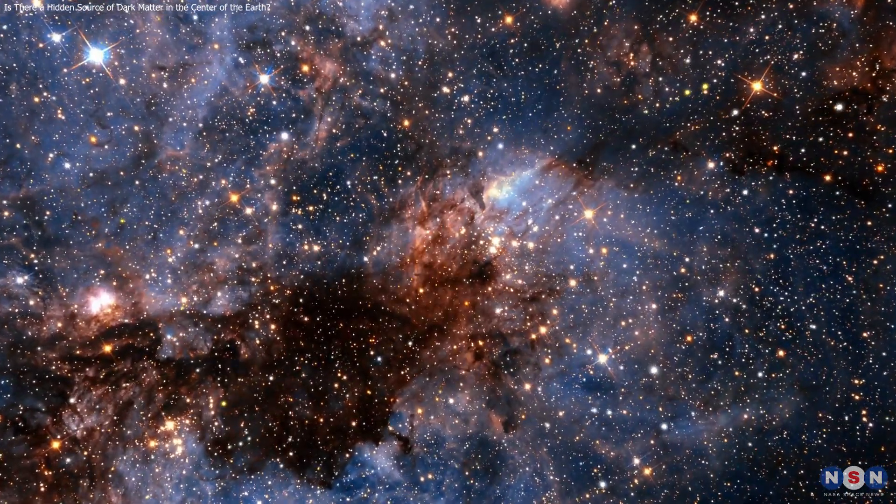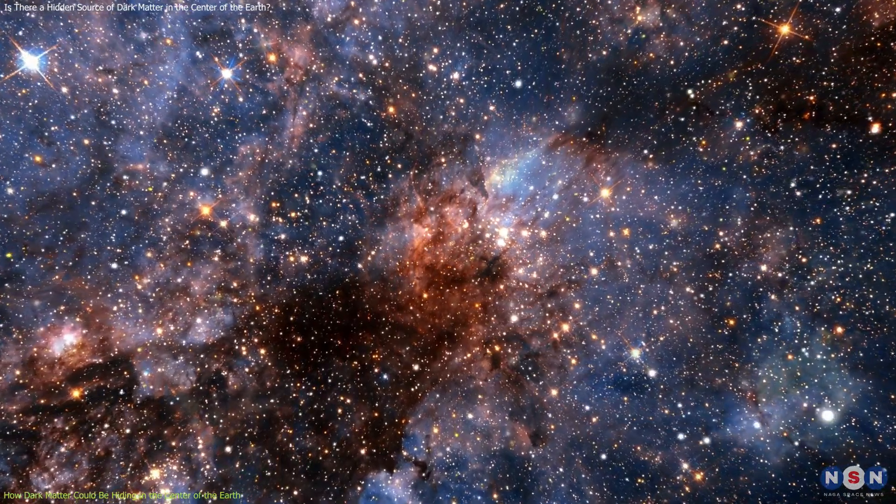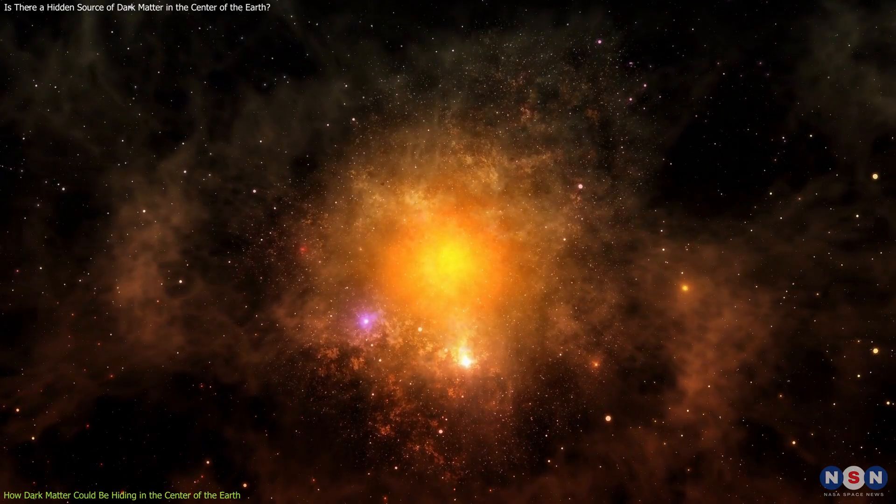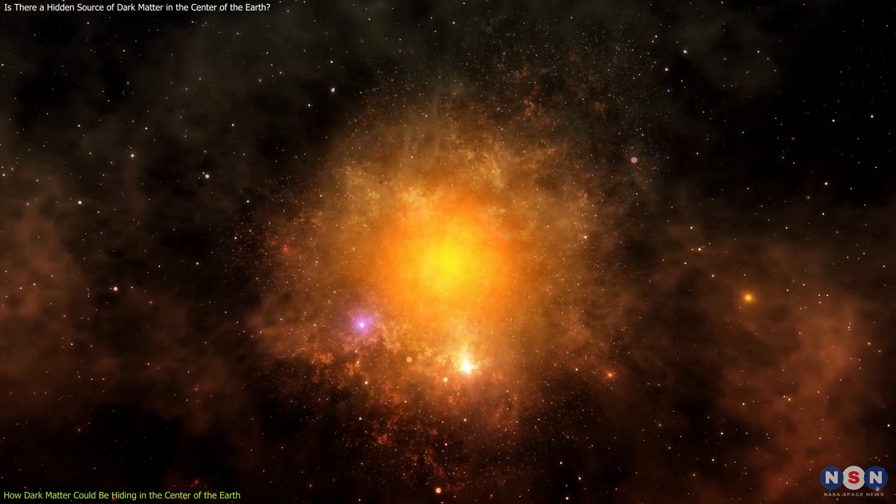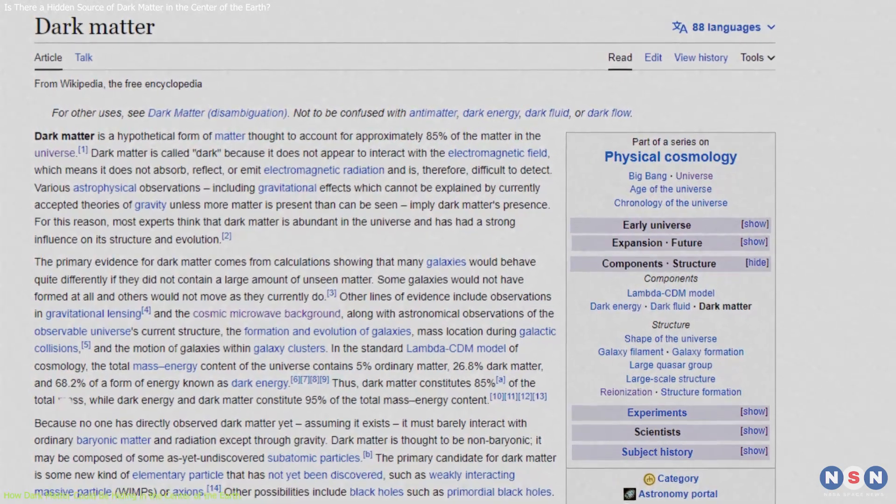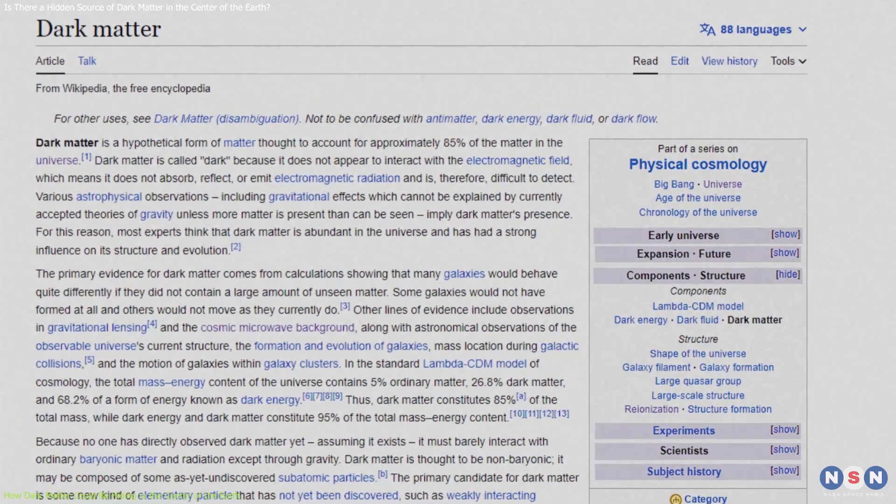One of the most amazing and mysterious things about our universe is that most of it is invisible to us. We can only see a tiny fraction of the matter that exists, and the rest is hidden in the dark. This hidden matter is called dark matter, and it is one of the biggest puzzles in modern physics.